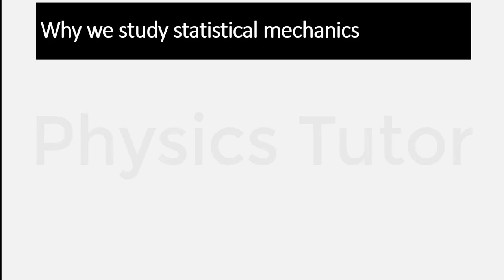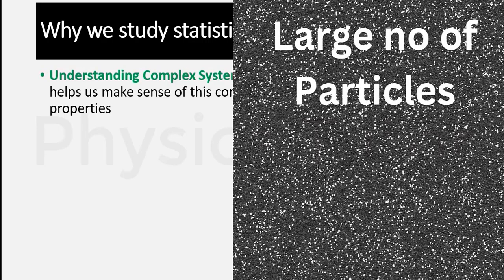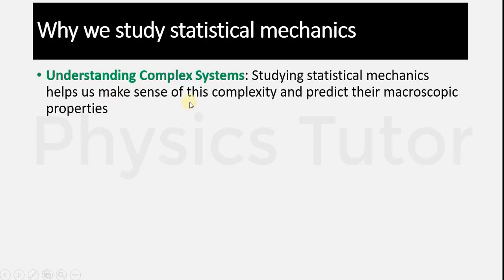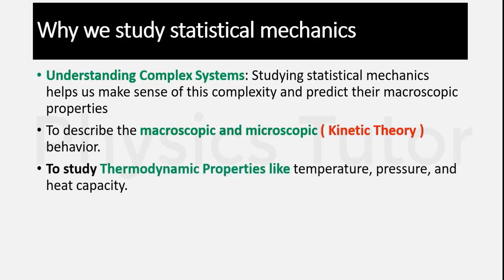A question arises: why do we study statistical mechanics? The answer is simple — to study complex systems. When we have a large number of molecules, atoms, ions, or particles, we use statistical mechanics to study them. Studying statistical mechanics helps us make sense of this complexity and predict macroscopic properties, such as kinetic energy behavior — when temperature increases, kinetic energy increases and their random motion becomes large. It also helps us study thermodynamic properties like temperature, pressure, and heat capacity.